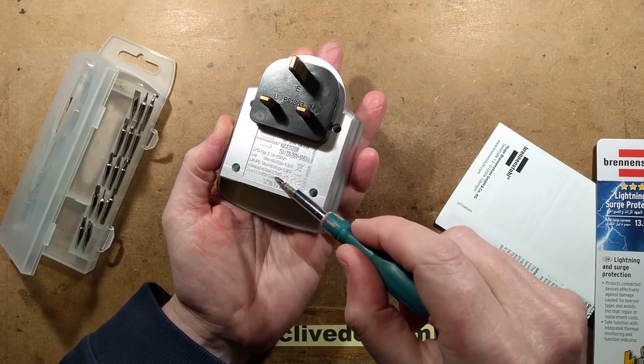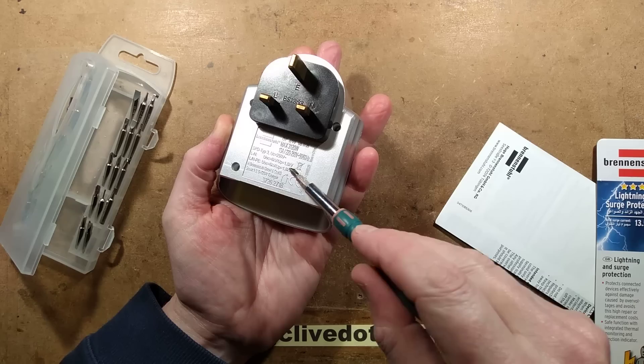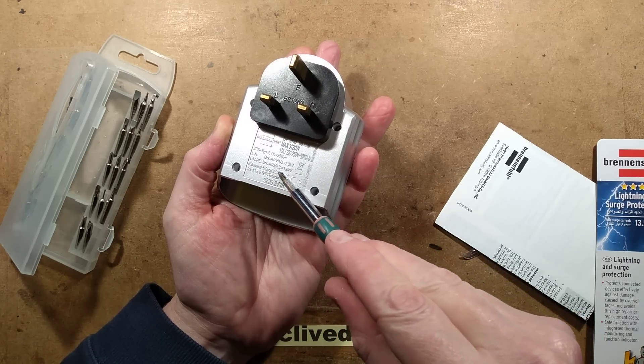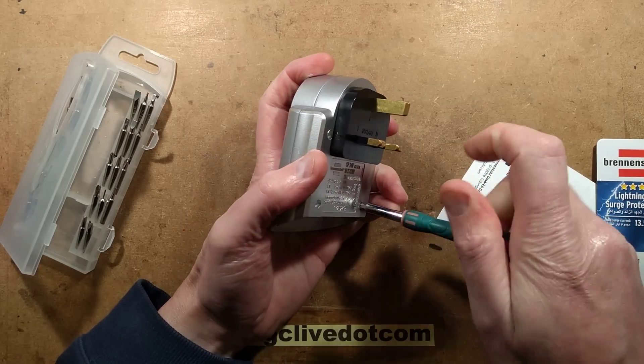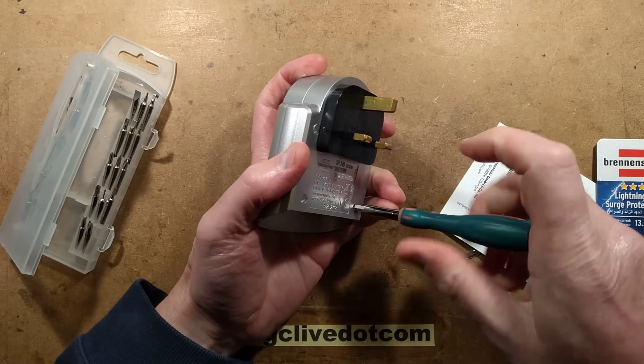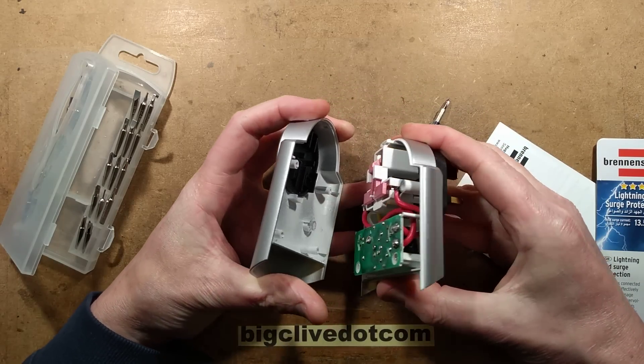What's it say in the back? Live to neutral 6kV, live neutral to protective earth 1.8kV. So it does have stuff going to protective earth, probably metal oxide varistors, maybe the little gas discharge things. We'll find out right now.